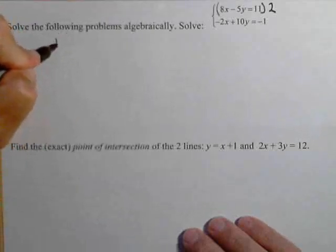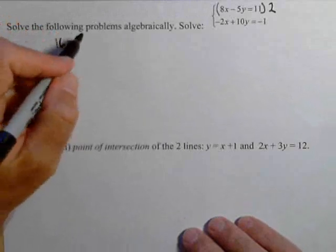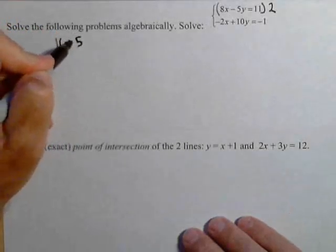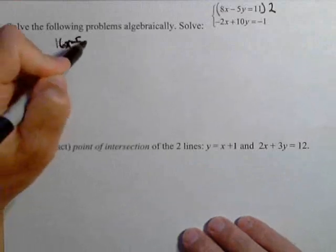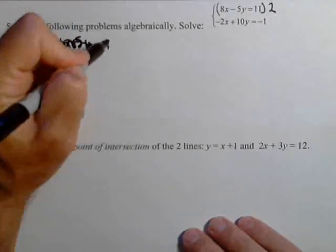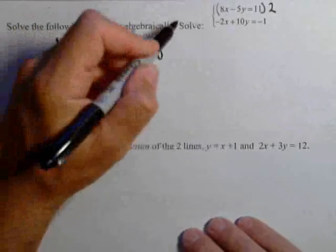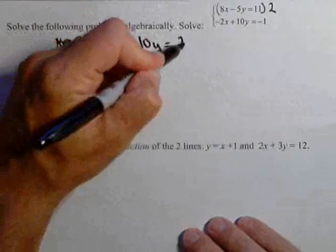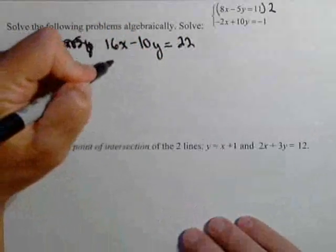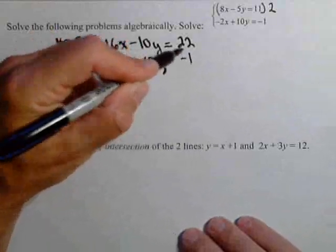So let's do that down here. 16x minus 10y equals 22. And I'm leaving my other equation alone. Minus 2x plus 10y equals negative one.